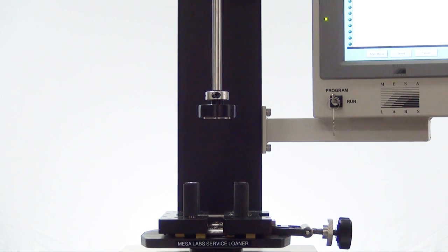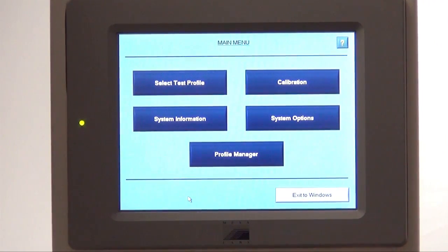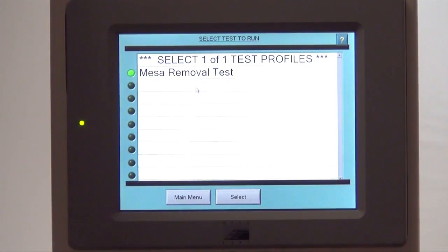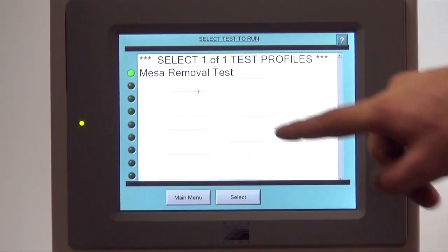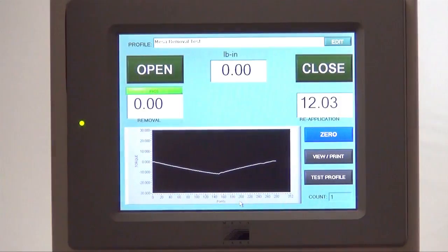Once you have the tooling properly installed, you are now ready to perform testing. From the main menu, hit the select test profile tab. This will take you to your test profile menu. This menu will show all the test profiles that you have entered into your Torco system. For this example, we will use Mesa Removal Test. Select Mesa Removal Test and hit the select key. This will take you to your main testing menu.